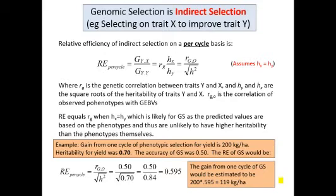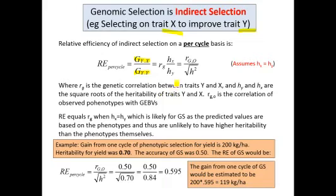Genomic selection is indirect selection — you select on trait X in an effort to improve trait Y. The relative efficiency of indirect selection on a per-cycle basis is shown in this equation: the gain from indirect selection (genomic selection) divided by the gain from direct selection (phenotypic selection). That gain per cycle is proportionate to the square roots of the heritability of the two traits, and Rg is the genetic correlation between the values for those two traits. The relative efficiency per cycle is the same as shown in the previous slide.